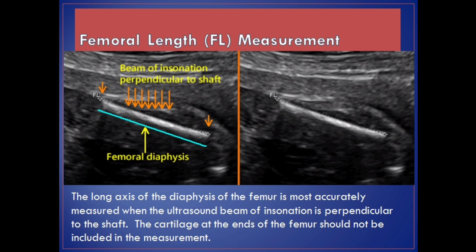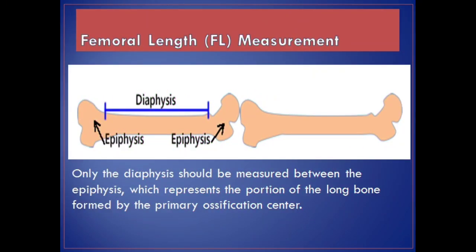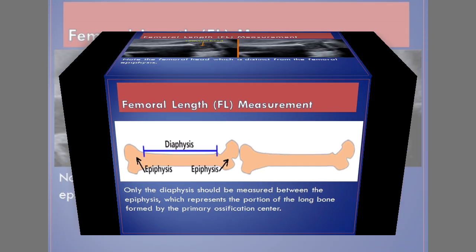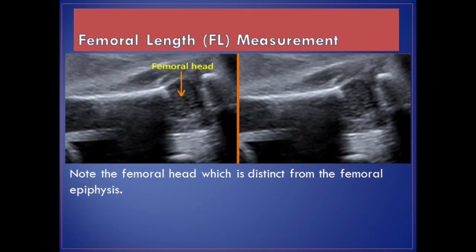Femoral length, FL, measurement. The long axis of the diaphysis of the femur is most accurately measured when the ultrasound beam inclination is perpendicular to the shaft. The cartilage at the ends of the femur should not be included in the measurement. Only the diaphysis should be measured between the epiphyses, which represents the portion of the long bone formed by the primary ossification center. Note the femoral head, which is distinct from the femoral epiphysis.